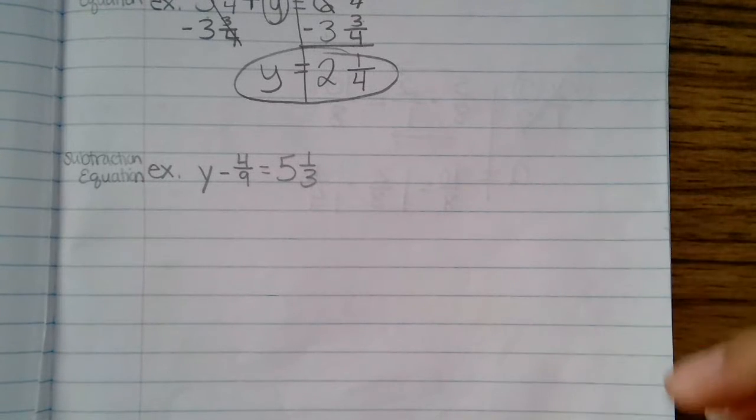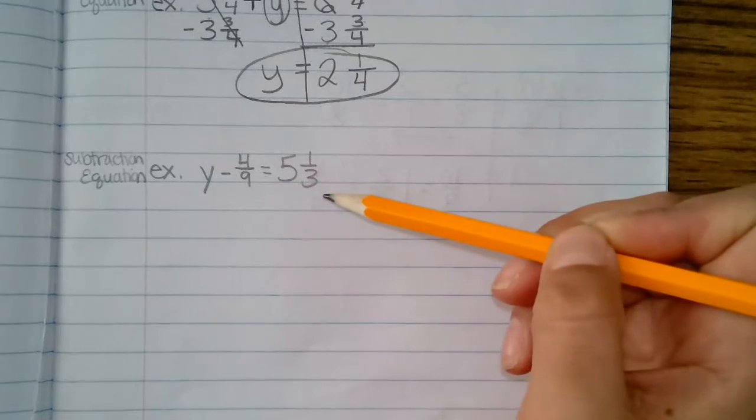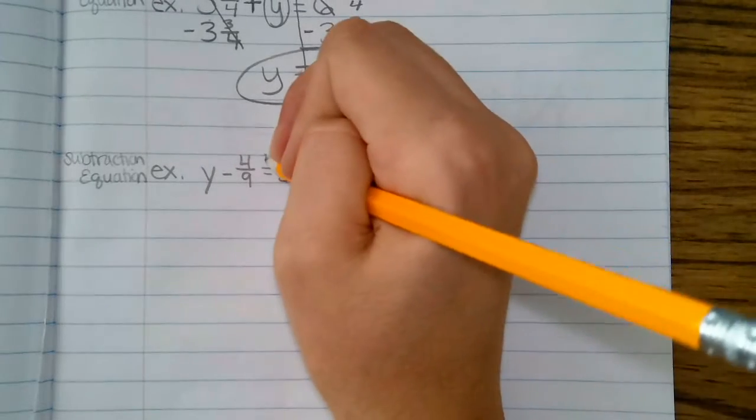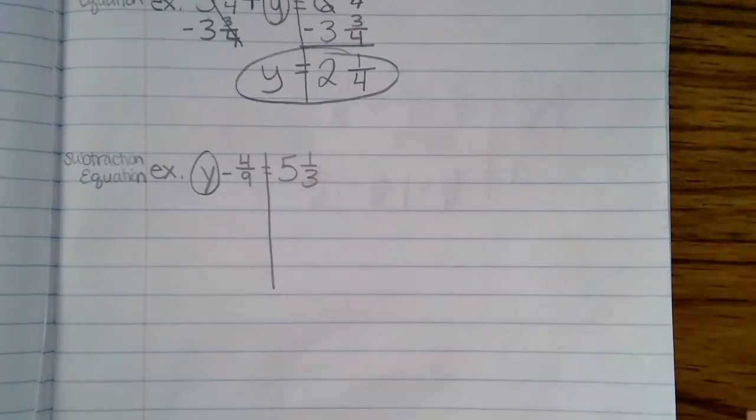All right, so now we are moving on to a subtraction equation with a fraction and a mixed number. I start by making my equal track. I circle my variable because I want to get that alone.